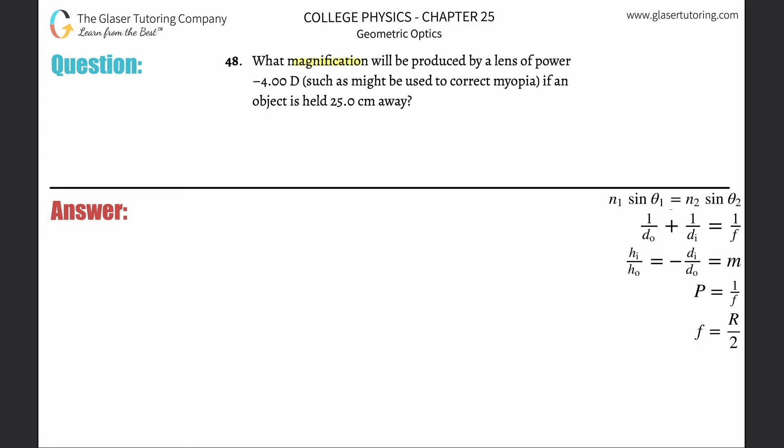Number 48: What magnification will be produced by a lens of power -4 diopters if an object is held 25 centimeters away? First, think about the question. What magnification means we need to use this formula here - either image heights and object heights, or image distances and object distances.